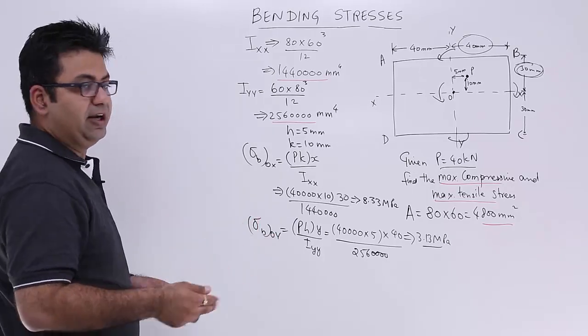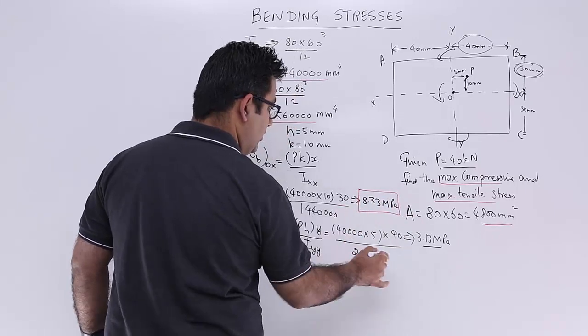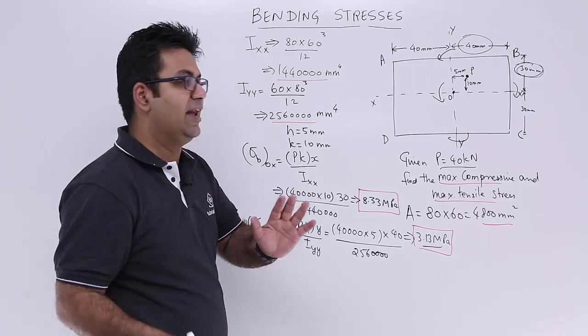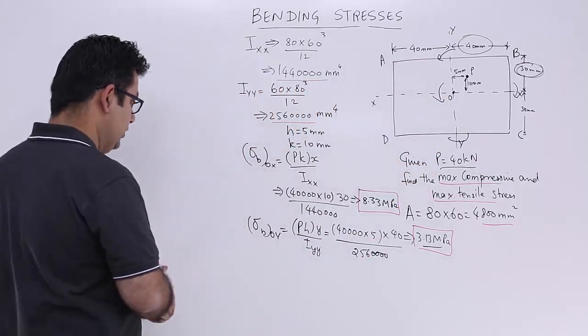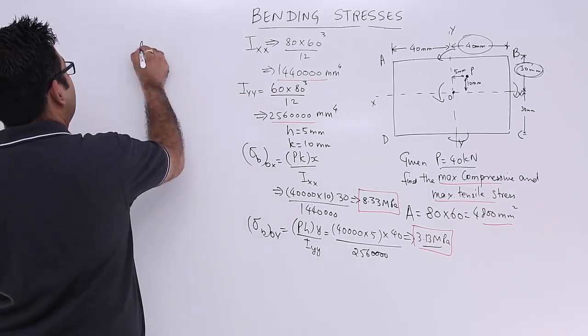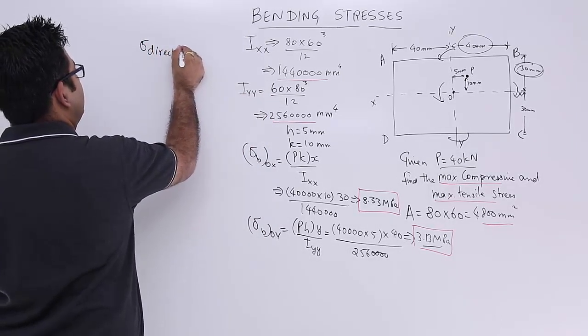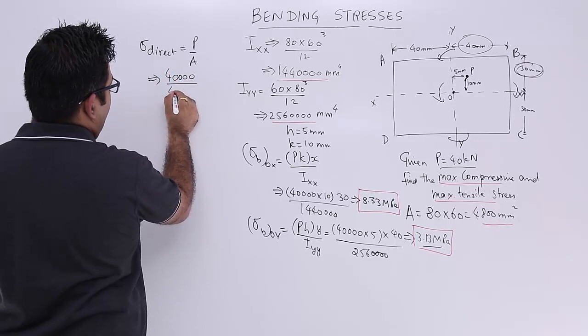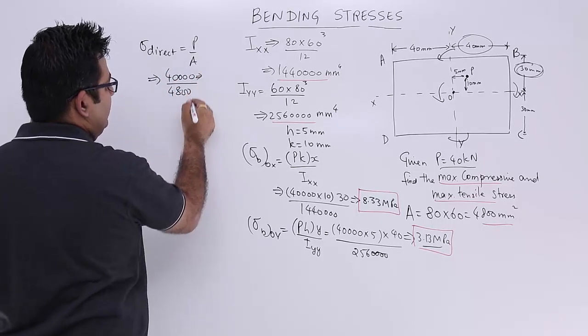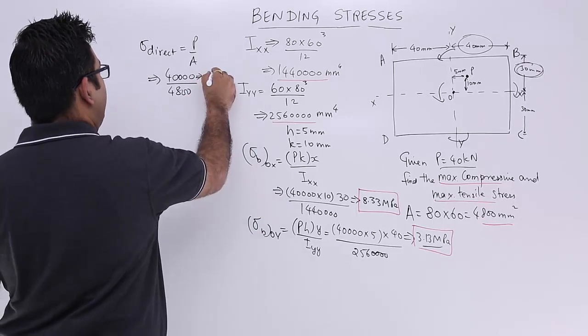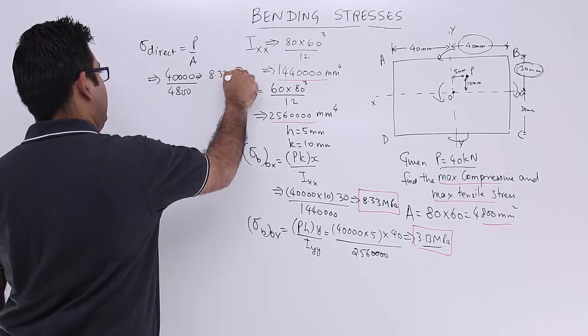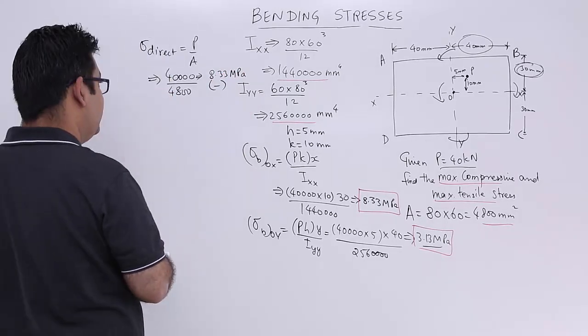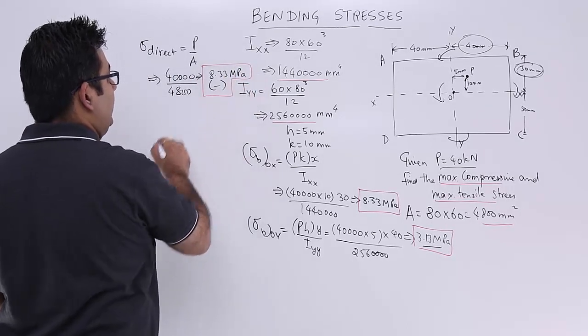Now let's find out the direct stress. So these are the two kinds of bending stresses being produced because you have bending about two axes, about x and about y axis. Let's move forward and find out the direct value of stress, which is load upon area, which is 40,000 by 4800, which will be somewhere about 8.33 MPa. Now this is a negative stress because it is a compressive stress. So this is 8.33 MPa.